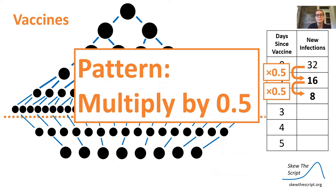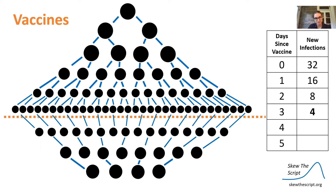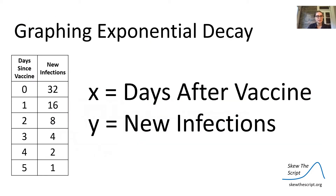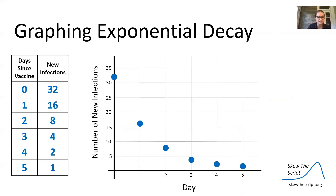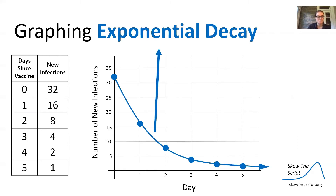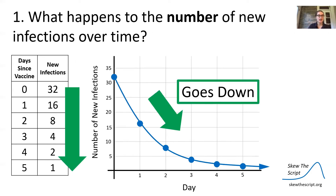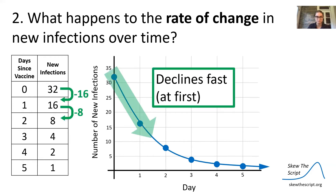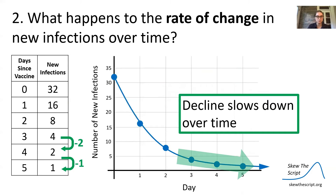There's a pattern again: we multiply by 0.5. To get today's infection number, we multiply yesterday's number by 0.5. We multiply eight by 0.5 to get four for day three, two for day four, and only one new infection on day five. Graphing this exponential decay with x being days after the vaccine and y being new infections, we can see the decline is fast at first — from 16 to eight — then slows down over time.